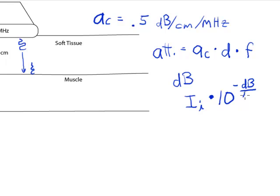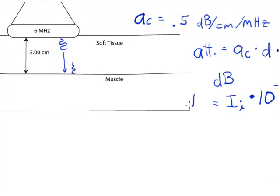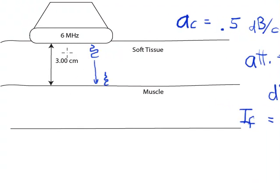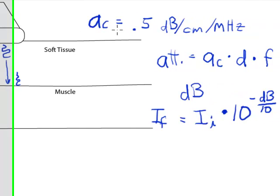However many decibels divided by 10. So 10 raised to the negative dB over 10 power, and then times the initial intensity is going to equal the final intensity that we'll see at the interface. Okay, so let's try an example with soft tissue. So let's say I have a 6 MHz transducer and the pulse is going to travel 3 cm through soft tissue.